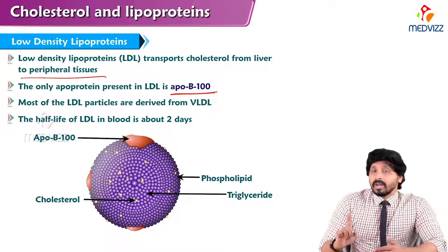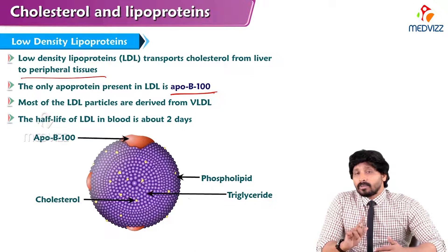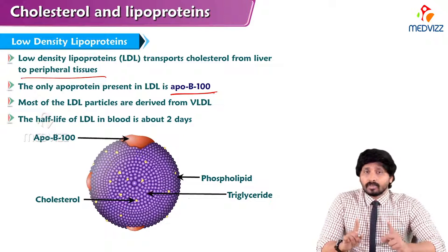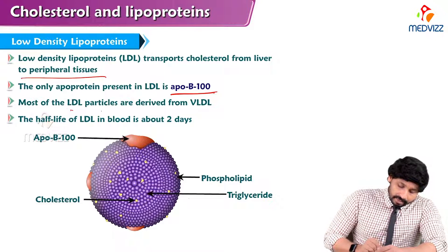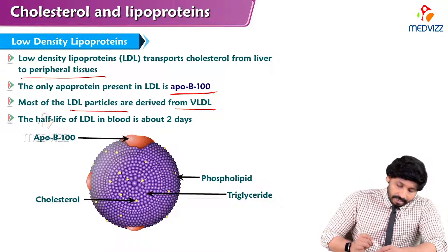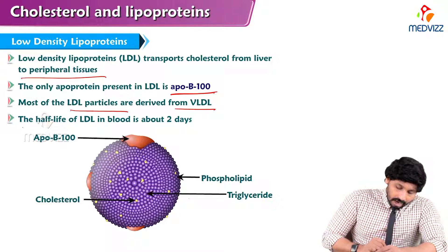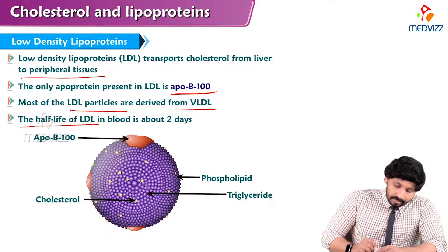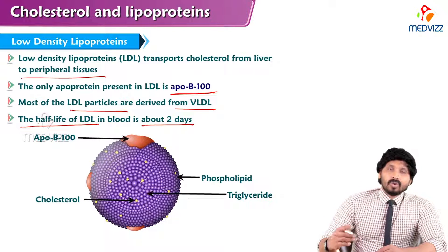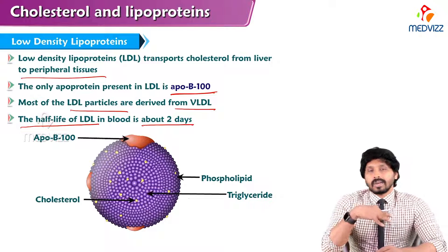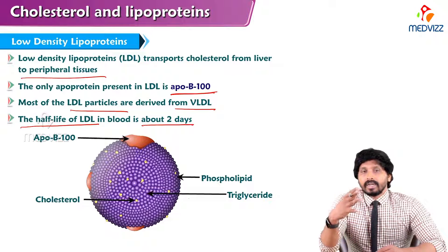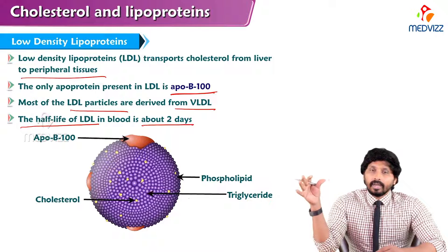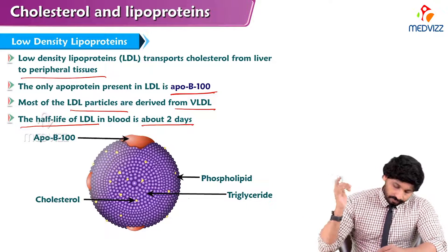ApoB100 is also part of one more lipoprotein, that is VLDL, which is also produced in the liver. Most of the LDL particles are derived from VLDL. The half-life of LDL in blood is about two days — once it starts from the liver, it reaches different parts of the body delivering its cholesterol content, taking a maximum of two days.